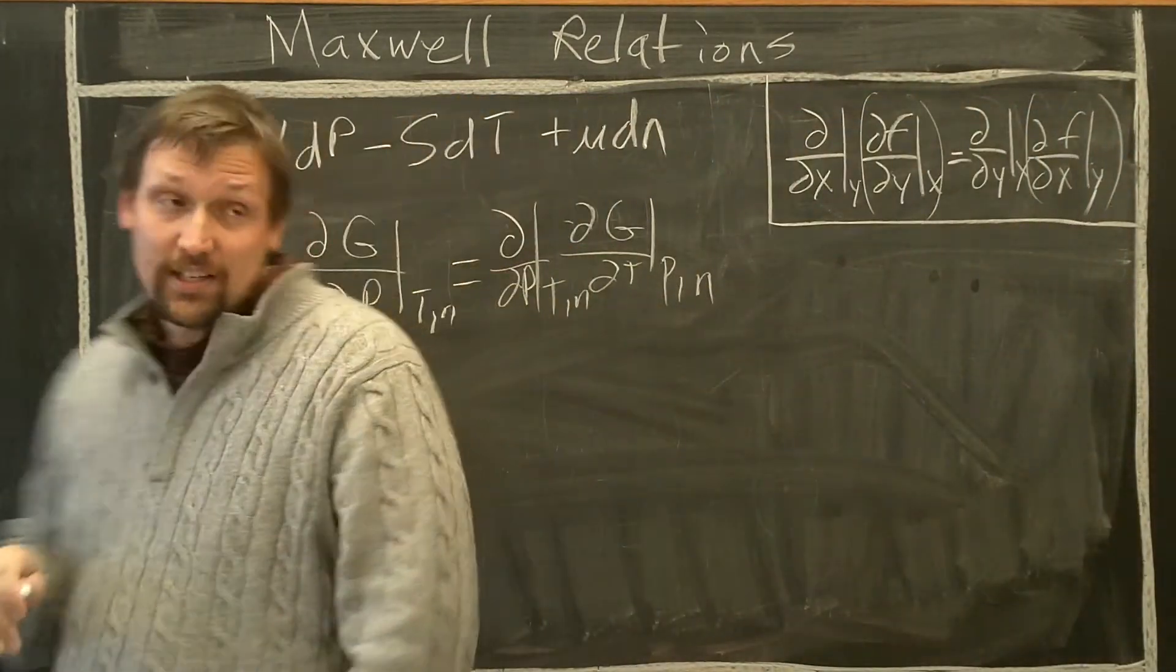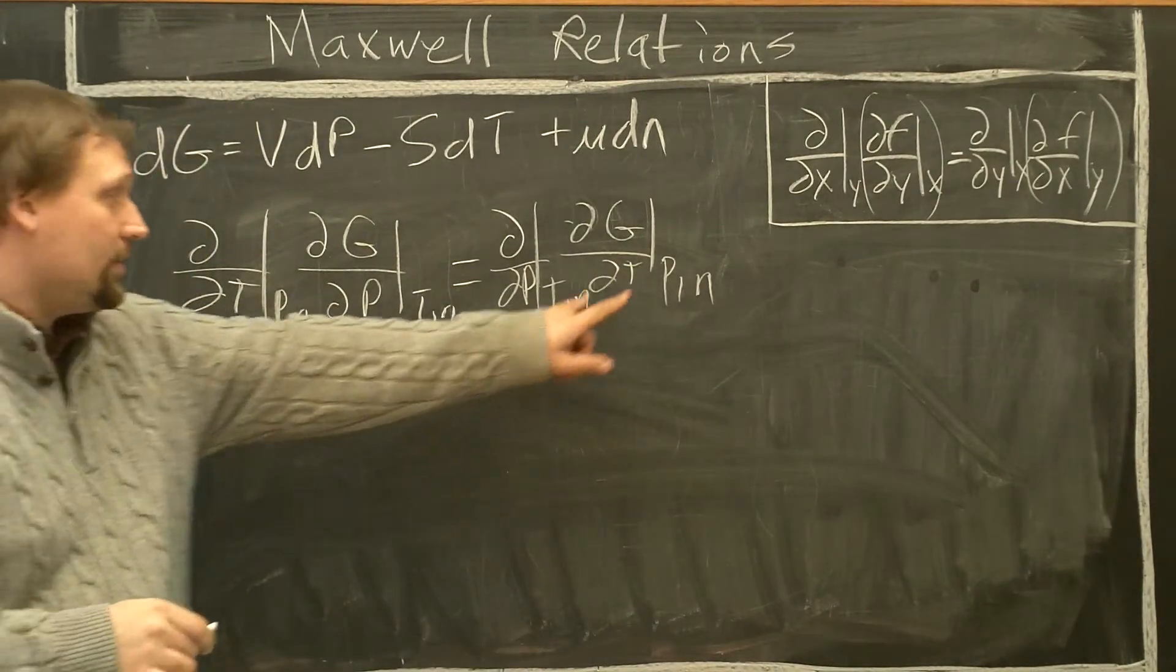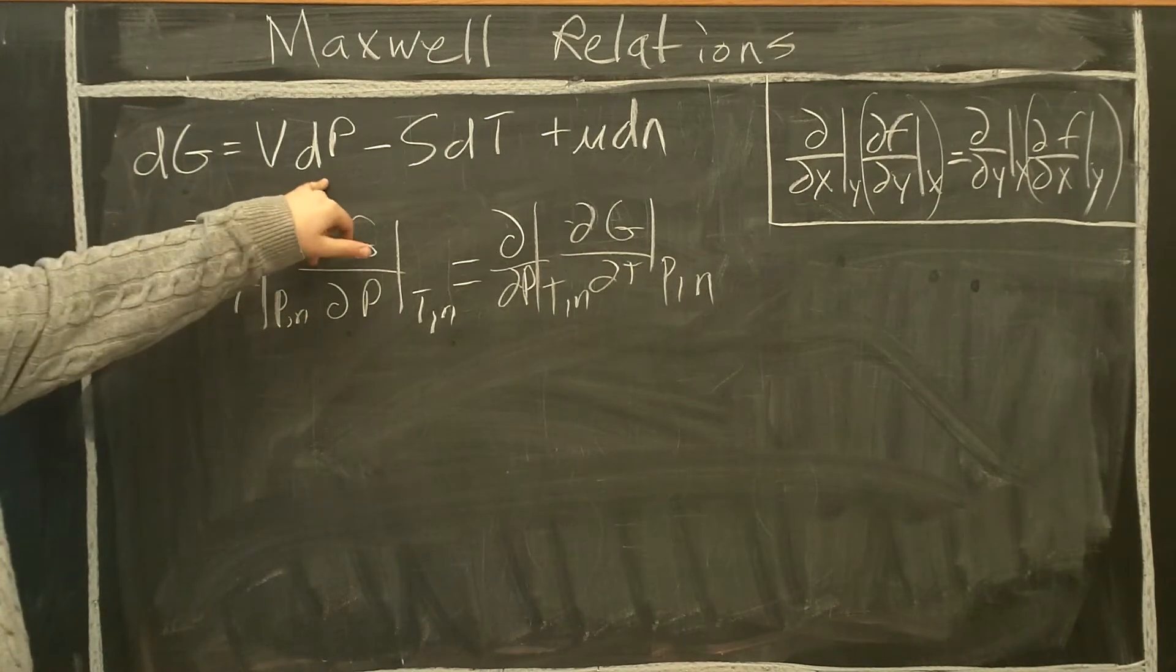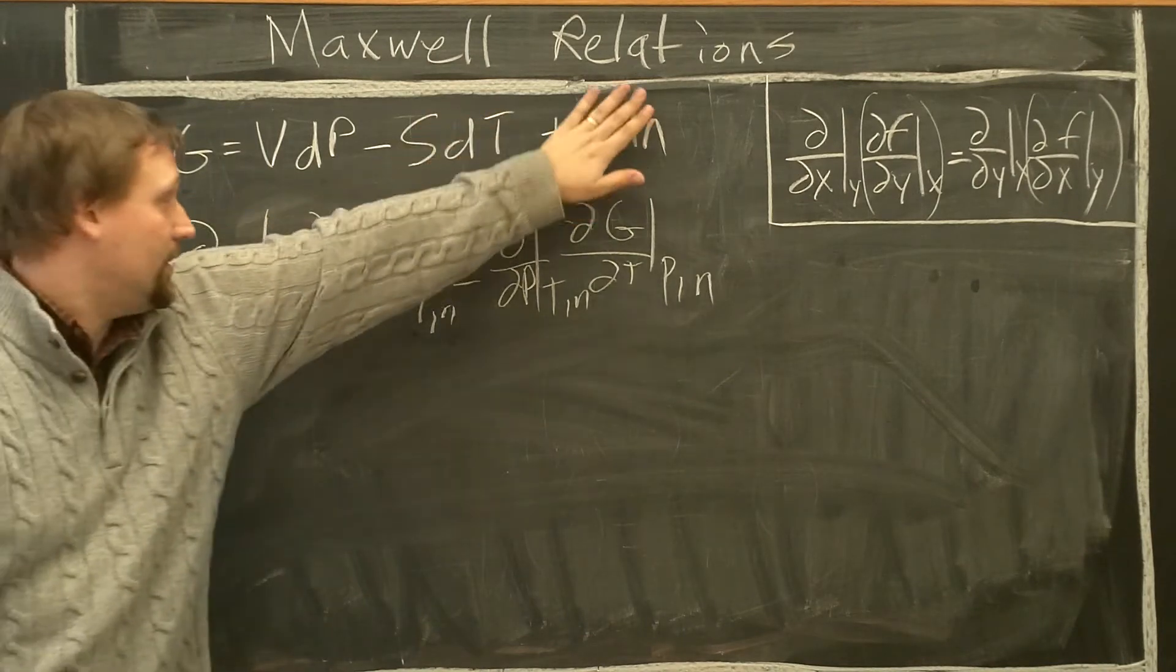So substituting in for dG/dP at constant T and N, and dG/dT at constant P and N. First, dG/dP constant T, constant N. So we have del V del T constant P comma N.